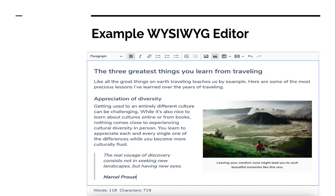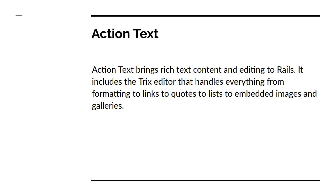Now in Rails 6 and onwards, we have Action Text to serve the same purpose. With Action Text, we can use a text editor to store content where we can add formatted links, attachments and more. Action Text brings rich text content and editing to Rails. It includes a text editor that handles everything from formatting links, code, lists, to embedded images and galleries.